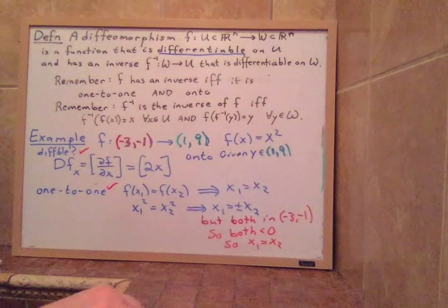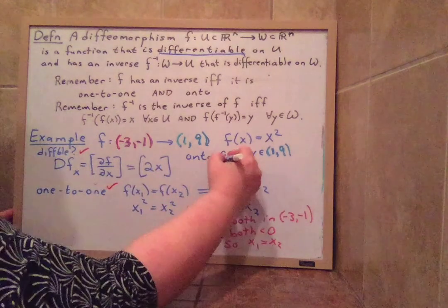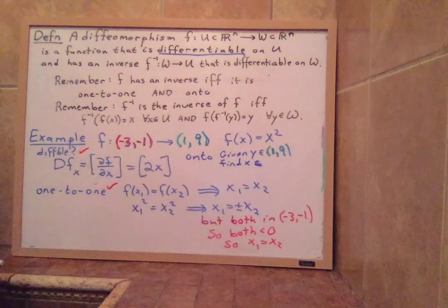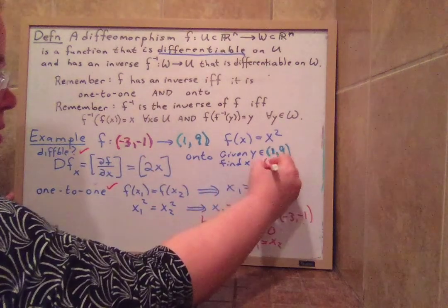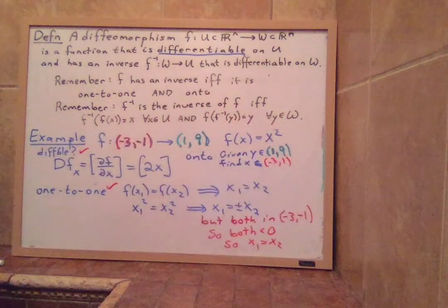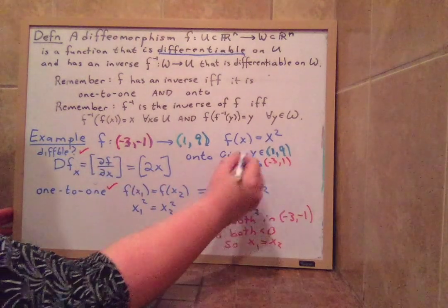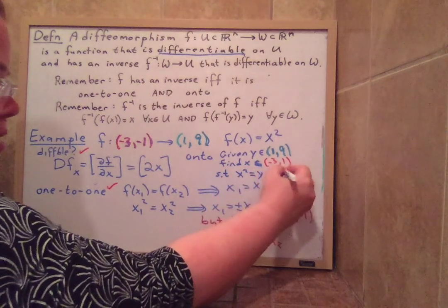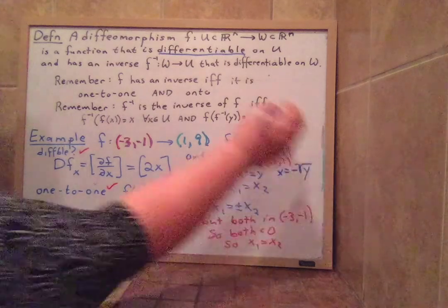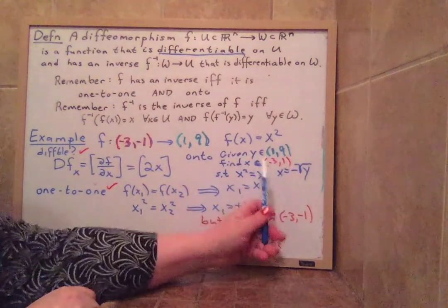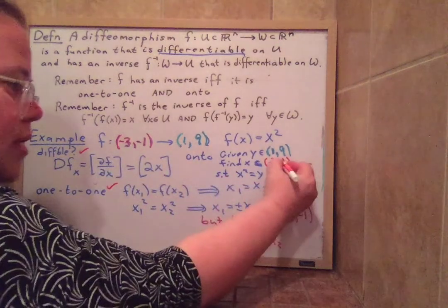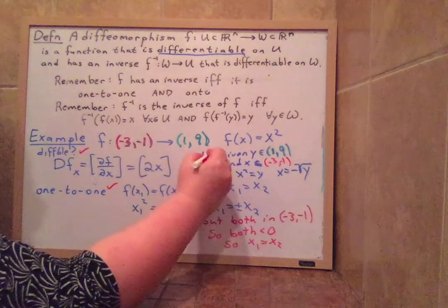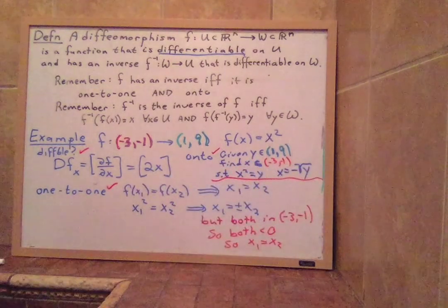We have to find x. Find x such that, and where does x have to be between negative three and negative one? Such that x squared equals y. And the answer is x equals negative square root of y. Y has a square root because it's a number between one and nine. And we need to choose the negative one because x has to end up between negative three and negative one. Because of our domain. So yes, it is onto. So that's the justification for why it's onto.